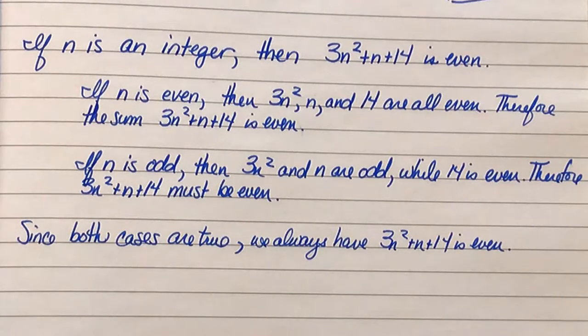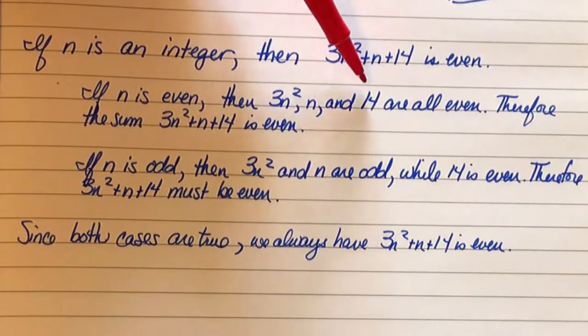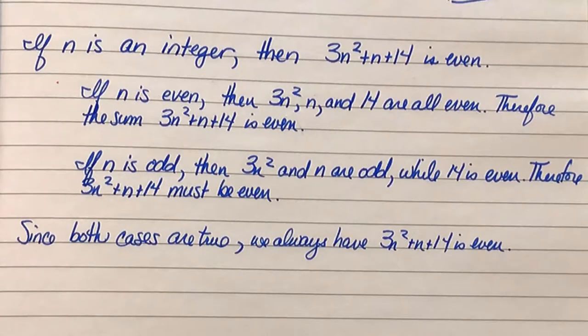A very simple way to prove this is to break into cases of even integers and odd integers. If n is even, then the three terms that you're adding, 3n squared, n, and 14, they are all even, which means when you add even plus even plus even, you have an even integer.